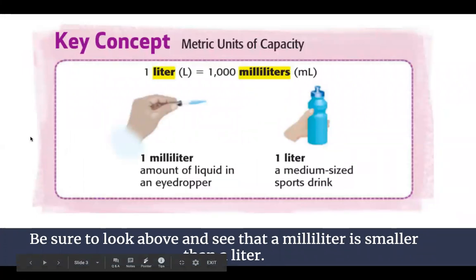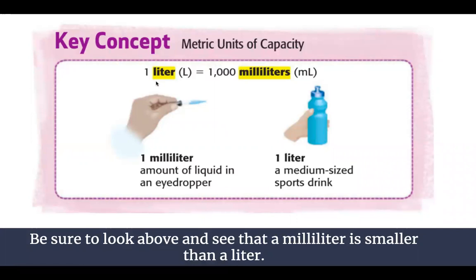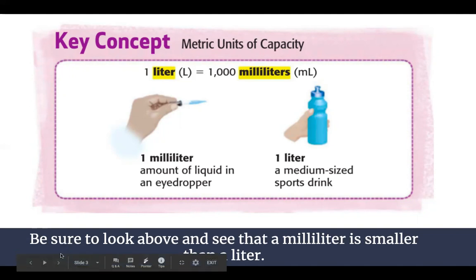This will be a relatively quick one because, as you can see in the picture, we only have milliliters compared to liters. One liter — the abbreviation being the capital L — is equal to 1,000 milliliters, abbreviated mL. One milliliter is about the amount of liquid in an eyedropper, whereas a liter is about the size of a medium-sized sports drink. A milliliter is the smaller unit and a liter is the larger unit. I have this purple picture printed out next to me so I remember the conversion: one liter equals 1,000 milliliters.